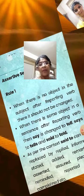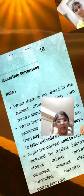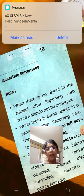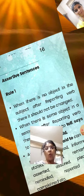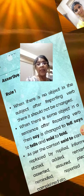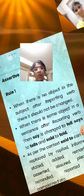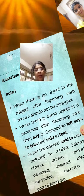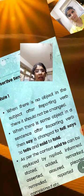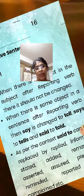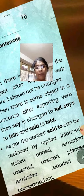Now I explain assertive sentences. When there is no object after the reporting verb, it should not be changed. When there is a subject in a sentence after the reporting verb, then 'say' is changed to 'talk', 'says' to 'tells', and 'said to' to 'told'. As per context, 'said to' can be replaced by: replied, informed, stated, added, remarked, asserted, pleaded, reminded, reported.